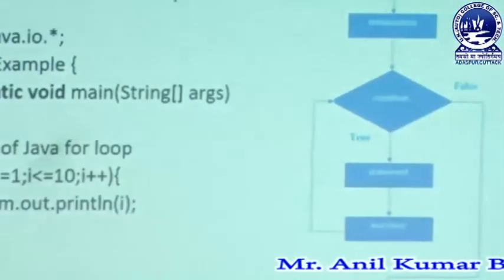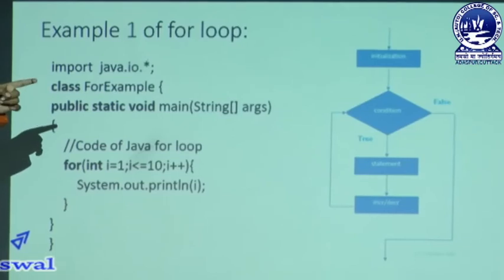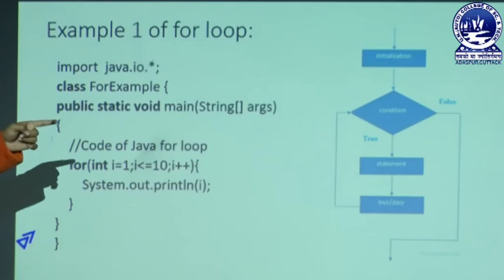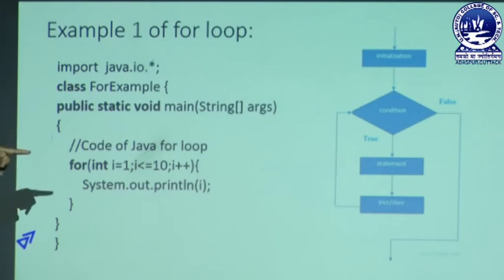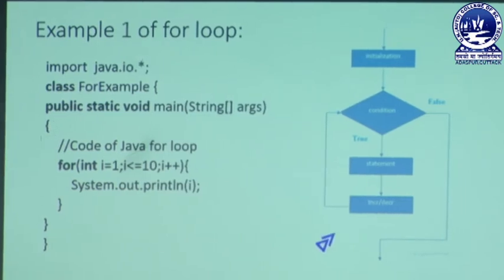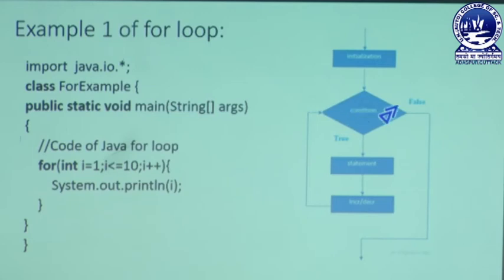Let us focus on the flowchart. First, the initialization section is executed. Whenever initialization is executed once, we move to the condition section. Through the condition, we check true or false. If condition is true, we move to the statement block. When the statement executes, control moves to the increment or decrement section. Then again we check the condition. When condition is true, the statement block executes again. When condition is false, the flow breaks and control moves out of the for-loop. That is the simple flowchart of the for-loop structure.